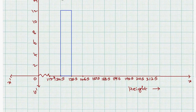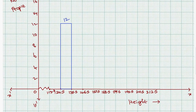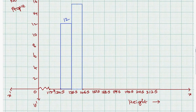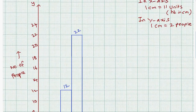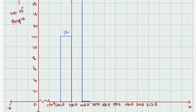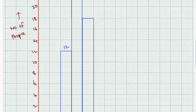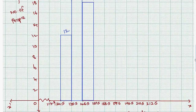We plot bars for each class interval according to the frequency values: 22, 18, 24, 15, 7, and 2. The highest frequency is 24, and the lowest is 2. Each bar is drawn touching the next, confirming the continuous nature of the histogram. There are 7 data groups in total.